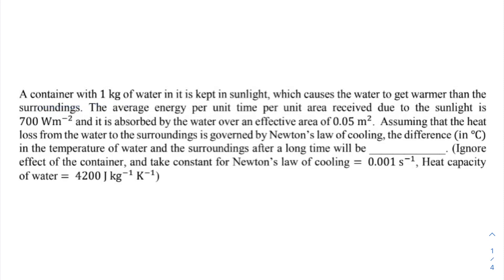A container with 1 kg of water in it is kept in sunlight which causes the water to get warmer than the surroundings. The average energy per unit time per unit area received due to the sunlight is 700 watt per meter square and it is absorbed by the water over an effective area of 0.05 meter square.